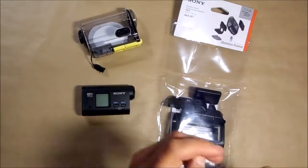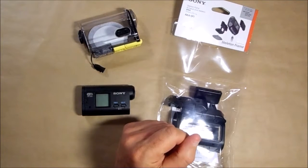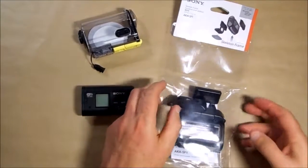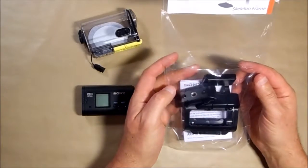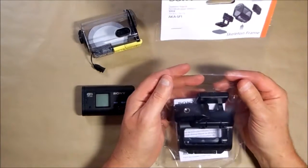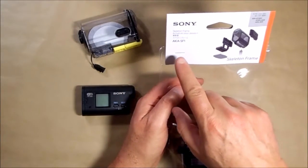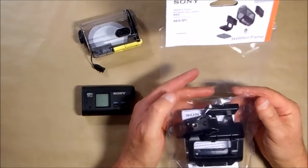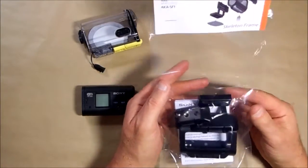Hello YouTubers, this is David with Get Bent Fishing. Today I'm going to be doing an unboxing of a Sony skeleton frame. This skeleton frame is Sony part number AKA-SF1. I picked this up on eBay, not very expensive, probably about the twenty dollar range.